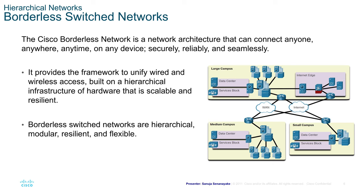Borderless switch networks. The Cisco borderless network is a network architecture that can connect anyone, anywhere, anytime, on any device securely, reliably, and seamlessly. It provides the framework to unify wired and wireless access built on a hierarchical infrastructure of hardware that is scalable and resilient. The borderless switch networks are hierarchical, modular, resilient, and very flexible.